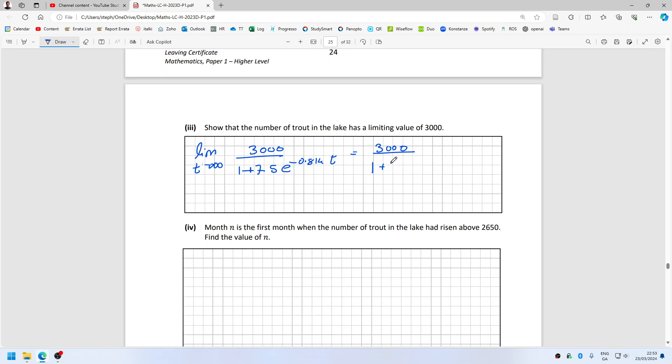Which is 3000, and this is because e to the minus infinity, so to speak, is zero. Well, really it's a limit.